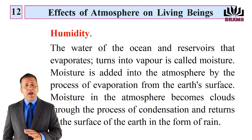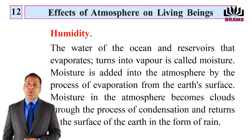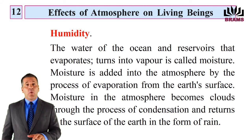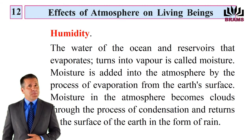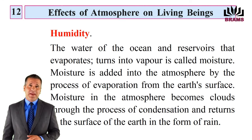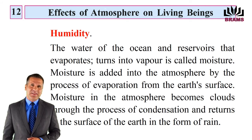Humidity: The water of the ocean and reservoirs that evaporates and turns into vapor is called moisture. Moisture is added into the atmosphere by the process of evaporation from the earth's surface. Moisture in the atmosphere becomes clouds through the process of condensation and returns to the surface of the earth in the form of rain.